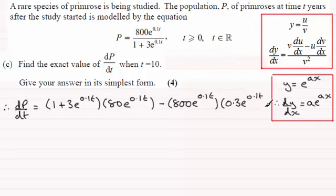OK, so we've got that, and it's all divided by the bottom of the fraction, all squared. So that's going to be 1 plus 3e to the power 0.1t, and all of that is squared.